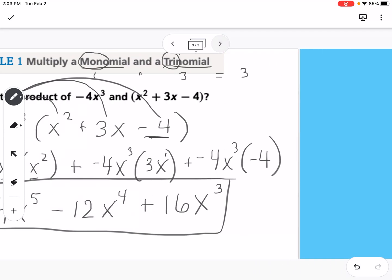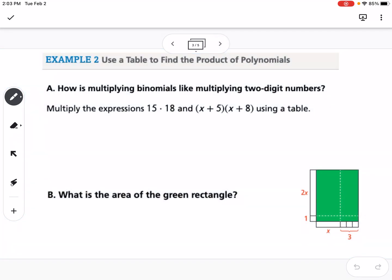Our next one is, how is multiplying binomials like multiplying two-digit numbers? We're going to multiply the expression 15 times 18. I'm going to show you a different way of multiplying. We can write that 15 is 10 plus 5, and 18 is 10 plus 8. So I'm going to make a little table here.